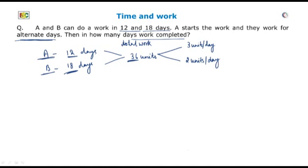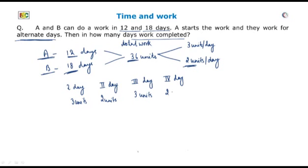It is given that A starts the work and A and B work on alternate days. It means on the first day A did 3 units of work, the second day B did 2 units of work, then again the third day A did 3 units, and the fourth day B did 2 units. This cycle will keep going on till they achieve 36 units of work. So A and B together do 5 units of work in 2 days.